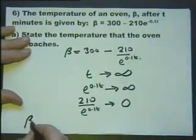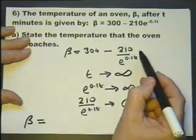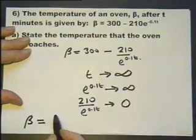In other words, in time, this will get to be zero and you'll end up with 300.